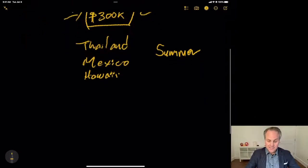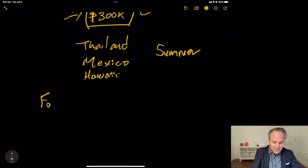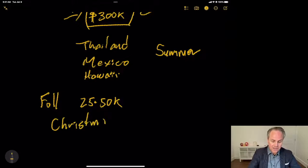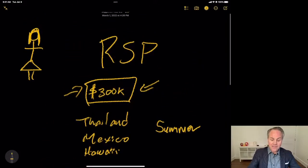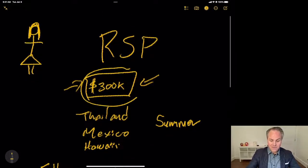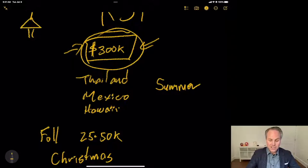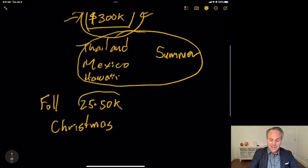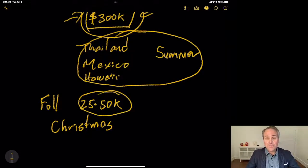But what happens is she gets back in the fall and ends up making maybe $25,000 to $50,000. Then we get into the winter time and especially Christmas. Christmas for investment advisors and a lot of people in the financial industry is a really slow time of year. She essentially got that $300,000 at the beginning of the year and really spent all that money over the summer.